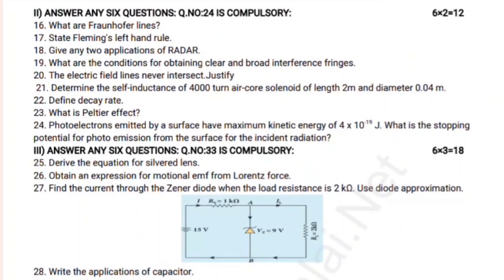Photo electrons emitted by the surface have a maximum kinetic energy of 4 × 10⁻¹⁹ joules. What is the stopping potential of photo emission from the surface for the incident radiation? You can see all the theory and sums — prepare for that.